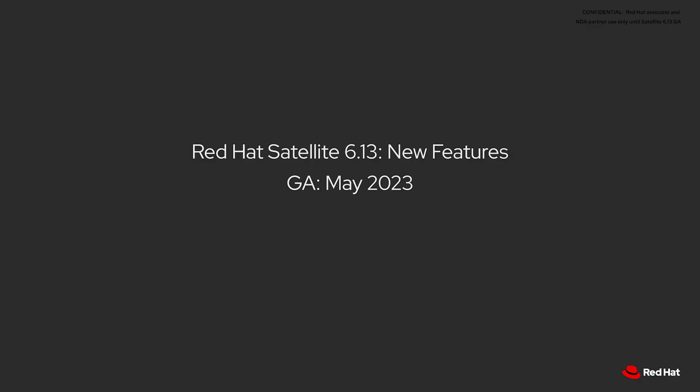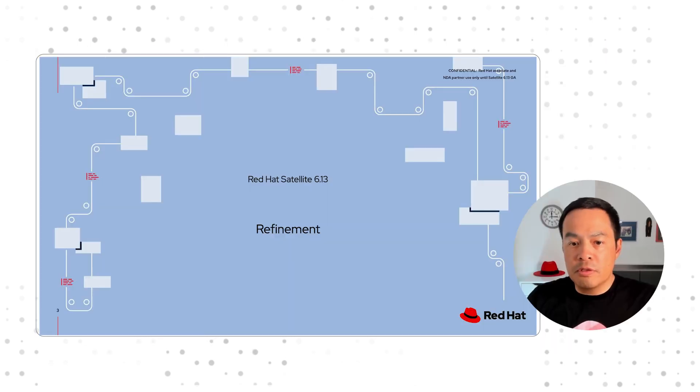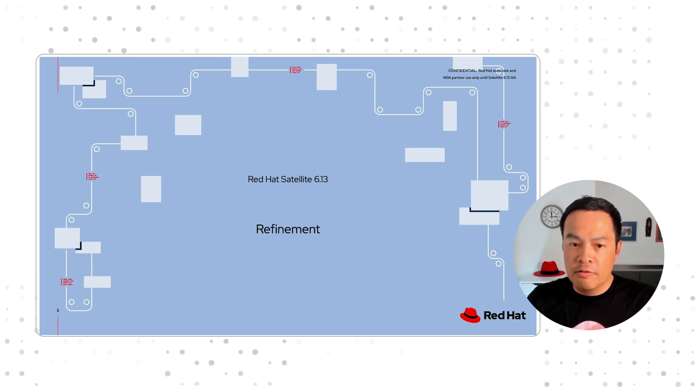Hi, I'm Matthew Yee, Technical Marketing Manager at Red Hat, and I'm going to tell you about Red Hat Satellite 6.13, estimated to become generally available in May 2023. Satellite 6.13 intends to refine and improve operations while introducing new features to make managing and deploying Red Hat Enterprise Linux as efficient as possible, on-premises or in hybrid cloud environments.